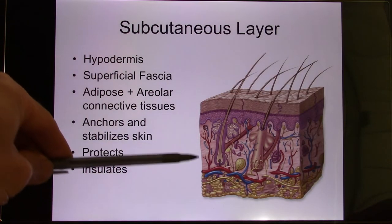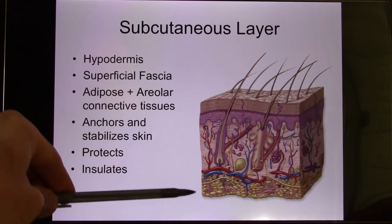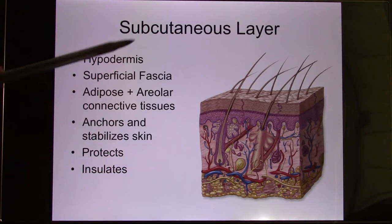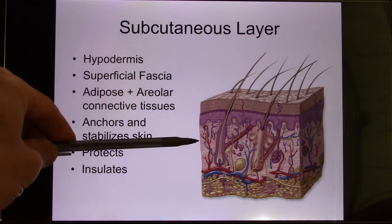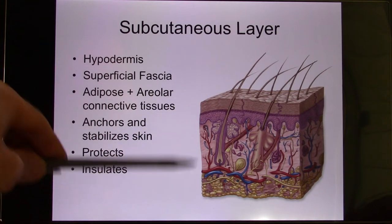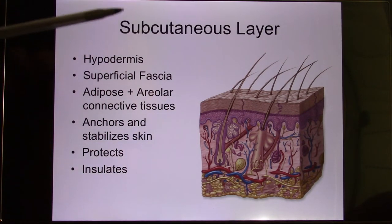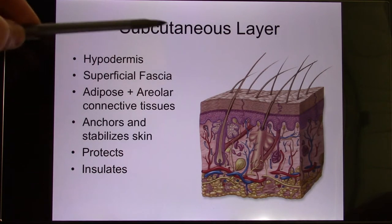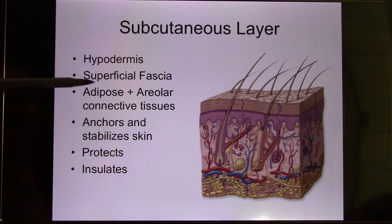Now we go to this layer — it's called the subcutaneous layer, also called the hypodermis. I have students who like 'hypodermis' because they say epidermis, dermis, hypodermis. Others like 'subcutaneous' because a subcutaneous needle goes to this layer. This is the layer with a lot of fat — adipose tissue.